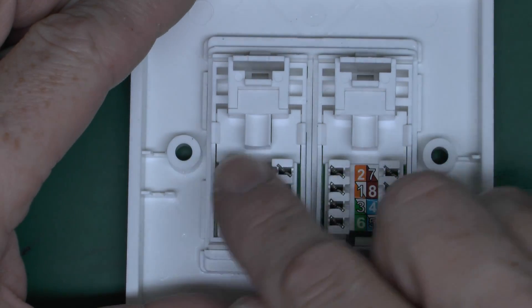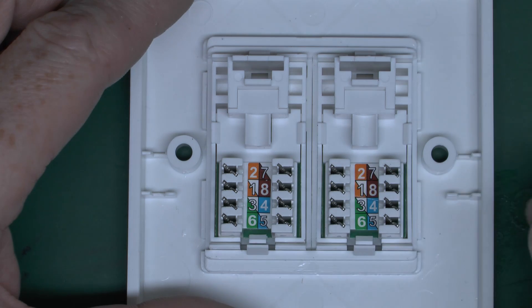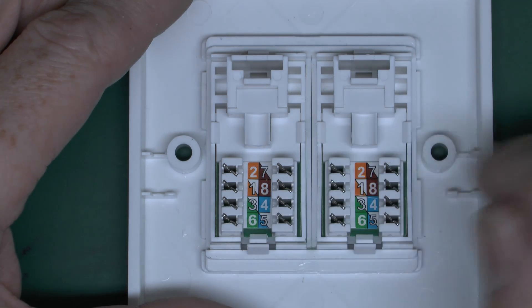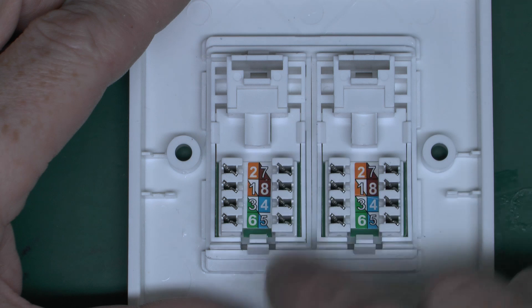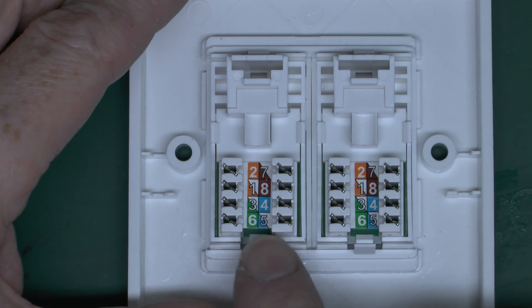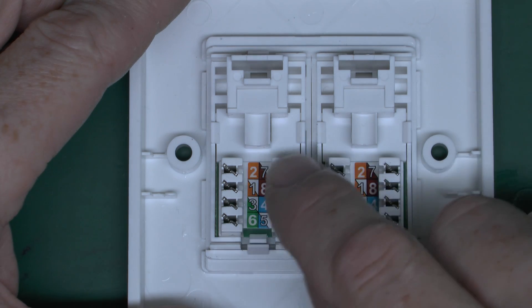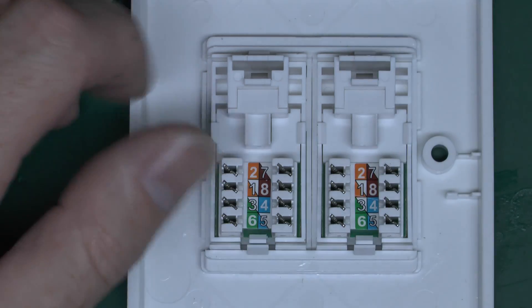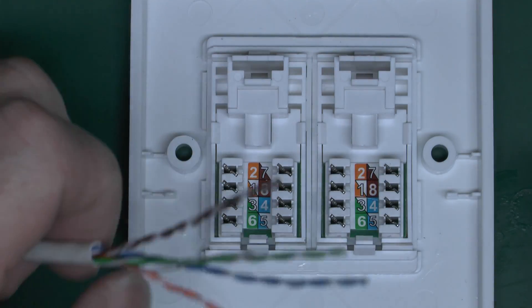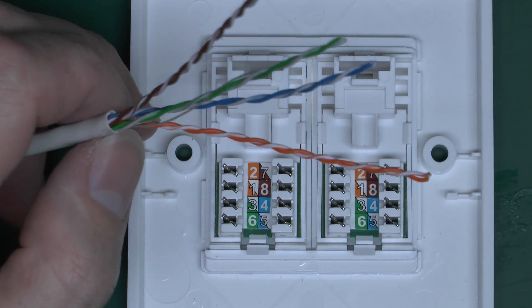The numbering here is the same as we saw in the previous video with the plugs, numbered from one to eight. Orange is one and two, then three and four is the green and solid blue, five and six is the stripe one and solid green, and the two browns are seven and eight. Same color coding, and these have the actual colors on there as well.